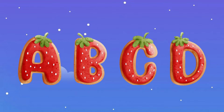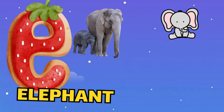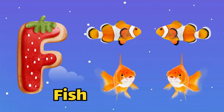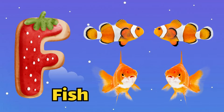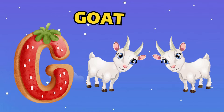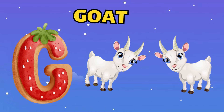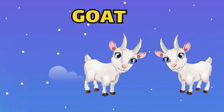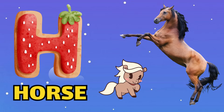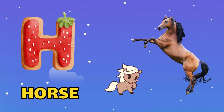E is for elephant, e-e-elephant. F is for fish, f-f-fish. G is for goat, g-g-goat. H is for horse, h-h-horse.